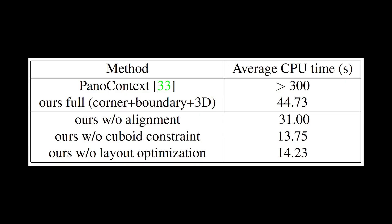In addition, this table shows the inference time of different algorithms running on CPU. It indicates that the full LayoutNet performs 7 times faster than PanoContext. So LayoutNet outperforms PanoContext significantly in terms of speed and accuracy.